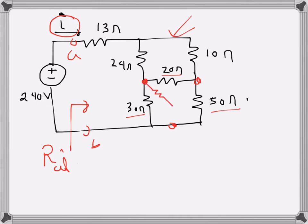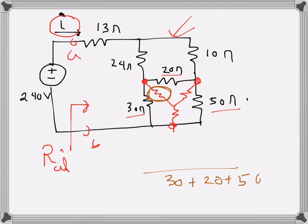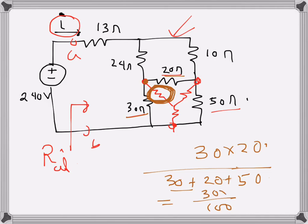If I convert them into Y, it will produce three new resistors. For the first one, the formula has the sum of the three delta resistances in the denominator: 30 + 20 + 50 = 100. In the numerator, since I'm talking about this resistance, the two resistances connected to this node are 30 and 20, so it's 30 × 20 = 600 over 100, which is just 6 ohms.